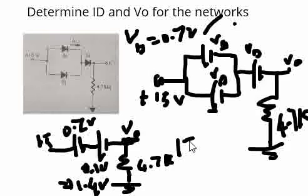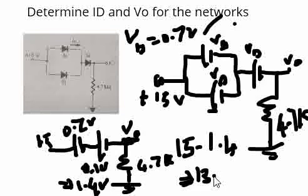So the voltage here will be 15 minus 1.4, which is 13.6 volts. So the voltage V0 is 13.6 volts.